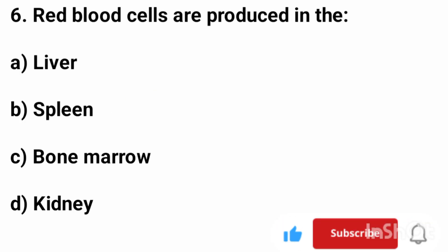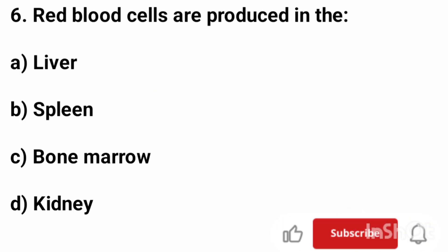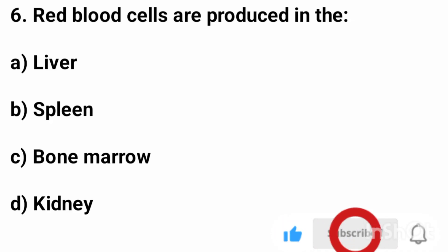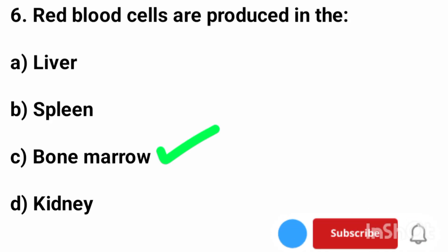Question number 6. Red blood cells are produced in the? The correct answer is option C, bone marrow.